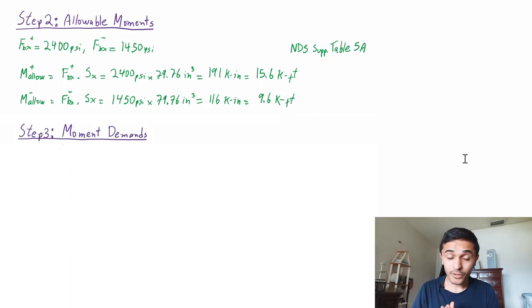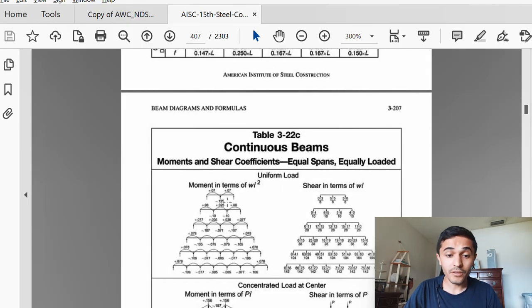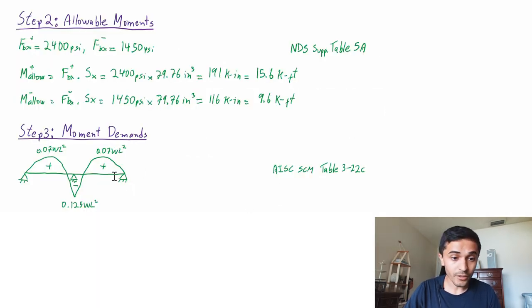But here then we get 15.6 kip feet for the positive moment and for the negative moment 9.6 kip feet. Now the third step is to find our moment demands and one little trick here is that this is a continuous beam. If we go to the steel construction manual table 3-22c we find here these moment coefficients for a continuously loaded beam with equal spans and this number is 0.07 for positive moment in terms of wl squared and for negative moment it's 0.125.